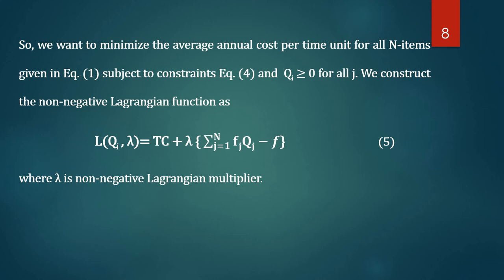So we want to minimize the average total cost per time unit for all N items subject to the floor space constraint and non-negativity of the procurement quantity. We construct the non-negative Lagrangian function: L(Qj, λ) = objective function (total cost) + λ × (floor space constraint), that is, sigma from j=1 to N of fj·Qj minus F, where λ is the non-negative Lagrange multiplier.